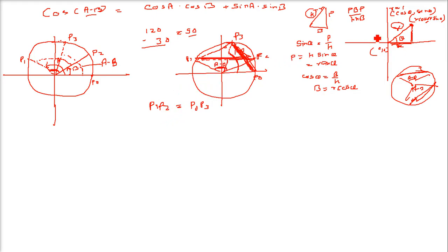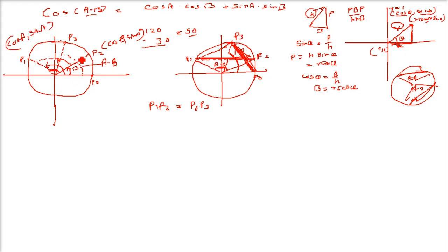Now, how do we get the coordinates of these points? Since we are using a unit circle, each point at angle θ is (cos θ, sin θ). So P2 is (cos B, sin B), P1 is (cos A, sin A), P3 is (cos(A - B), sin(A - B)), and P0, on the x-axis, is (1, 0).